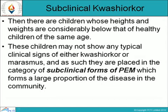There is also Subclinical Kwashiorkor, where children's heights and weights are considerably below those of healthy children of the same age, yet without showing any typical clinical signs of Kwashiorkor or Marasmus. These children form a large proportion of subclinical forms of PEM in the community.